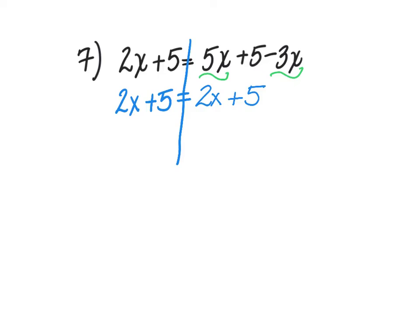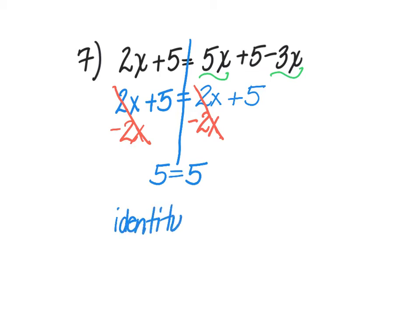I'm going to move the 2x on the right side over to the left side — it's a positive 2x, so I'm going to subtract 2x from both sides. The 2x's zero each other out on the right side, but they also cancel on the left side. So I don't have any variables left. I'm just left with the statement that says 5 is equal to 5. This is a curious kind of equation — it's called an identity equation. This happens whenever the variables cancel out and I'm left with a true statement.